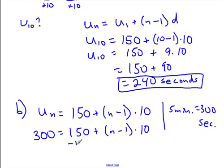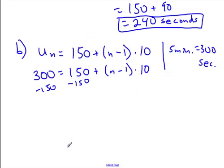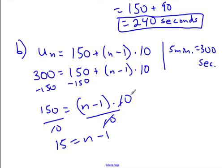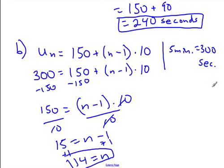We subtract 150 from both sides of the equation and get 150 equals (n minus 1) times 10. Dividing both sides by 10 gives 15 equals n minus 1. Adding 1 to both sides gives n equals 16 — wait, that's n equals 16. So on the 16th length, she'll take 300 seconds, or 5 minutes, to swim across.